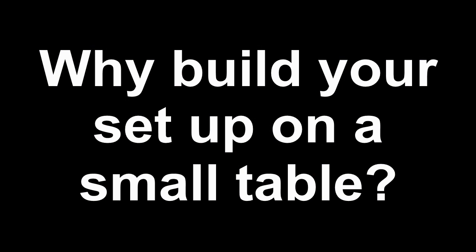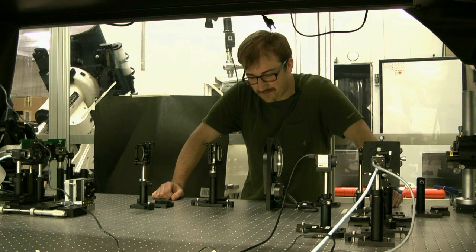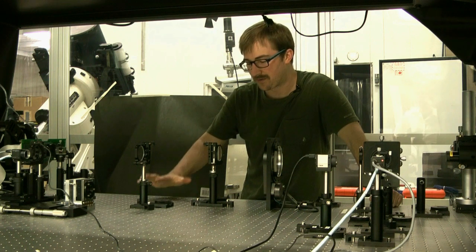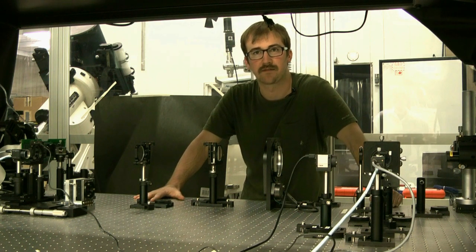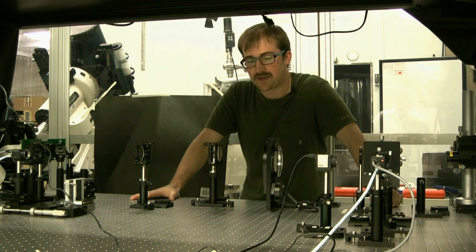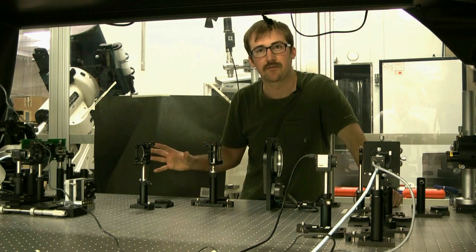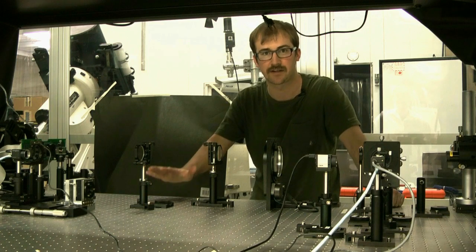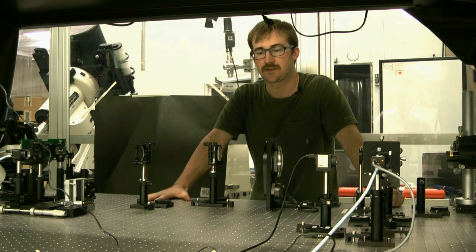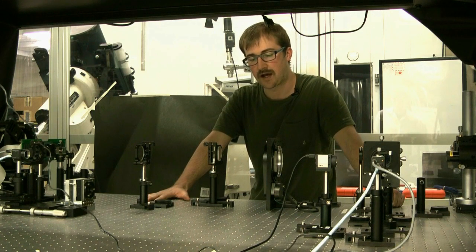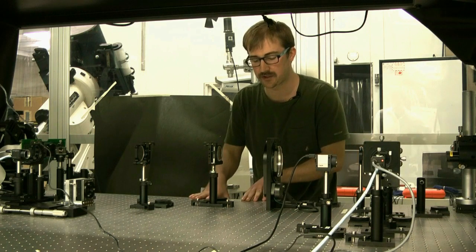Before we get started on the adaptive optics, why do you build it on a small table like this? We like to build things on small tables first because the problem with building a really large-scale instrument, like for the 30-meter telescope or any telescope for that matter, you can't just go out and build it on the telescope. You have to build it first at a location such as this one here at the Hertzberg Institute of Astrophysics.